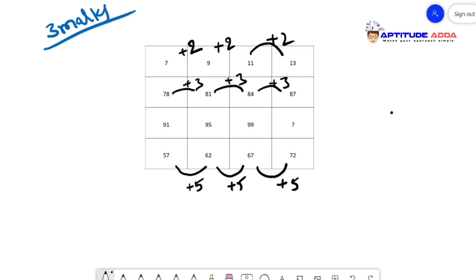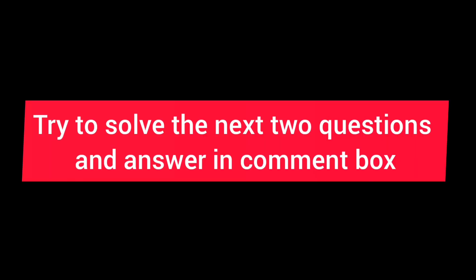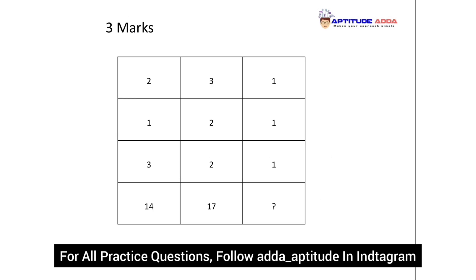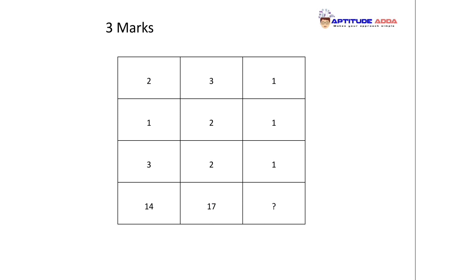Based on my logic, 91 plus 4 gives you 95, plus 4 gives you 99. So plus 4, 103 will be the answer. And of course in the options we have 103, and 103 is the right answer.